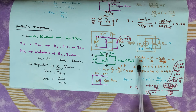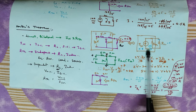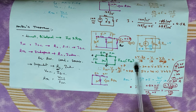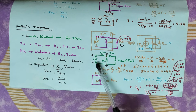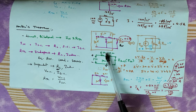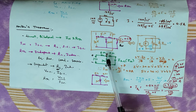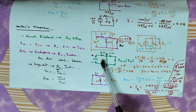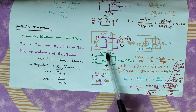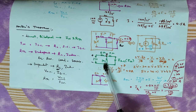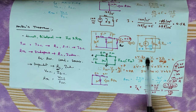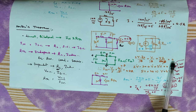I am performing node analysis. Here, I have only one node. I designate a reference node. Before applying KCL, I identify the reference node and assign the node voltage V to the single node.